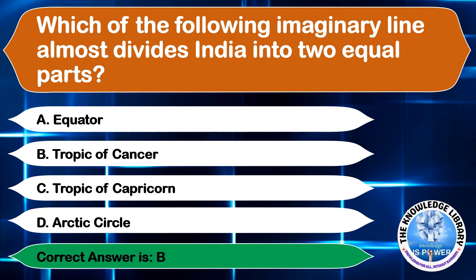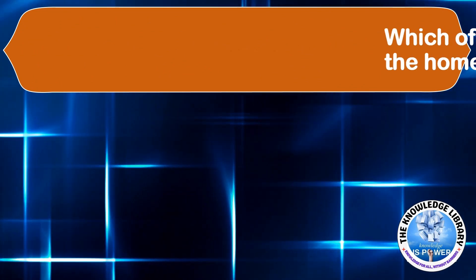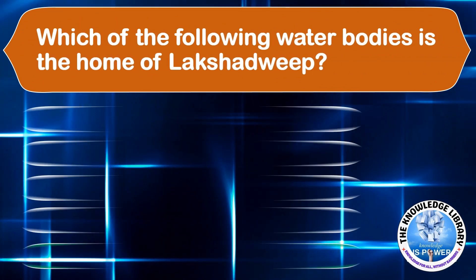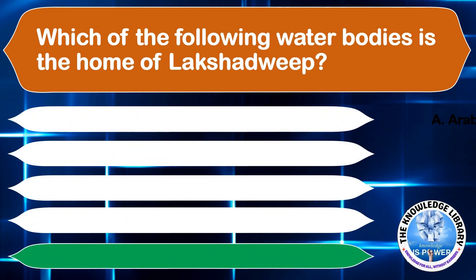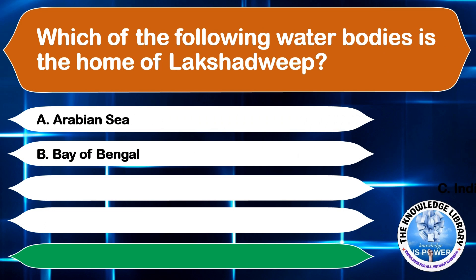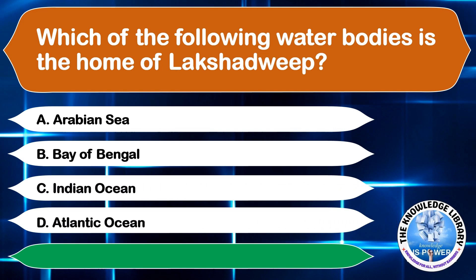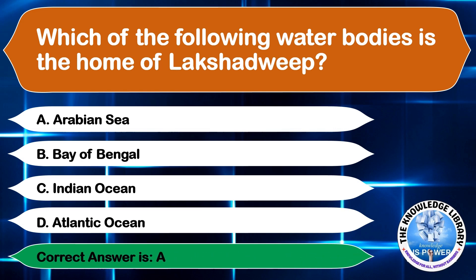Which of the following water bodies is home to Lakshadweep? A. Arabian Sea, B. Bay of Bengal, C. Indian Ocean, or D. Atlantic Ocean. The correct answer is option A, Arabian Sea.